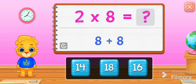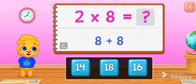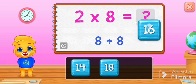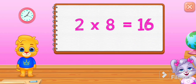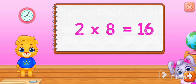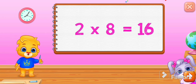Two times eight equals eight plus eight. Sixteen! Two times eight equals sixteen.